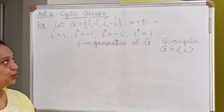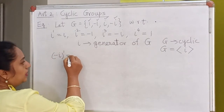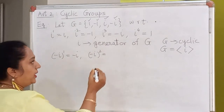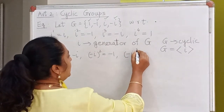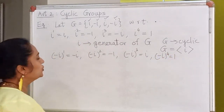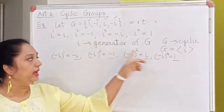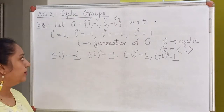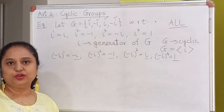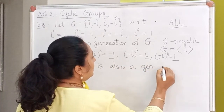A natural question to ask is: are there any other generators in this group? Let us look at the element -i and check whether -i is also a generator. Consider integral powers of -i: (-i)^1 = -i, (-i)^2 = +i^2 = -1, (-i)^3 = -(i^3) = +i, and (-i)^4 = +1. Once again, we get 1, -1, i, and -i — all elements of the group. So -i is also a generator of the group G.